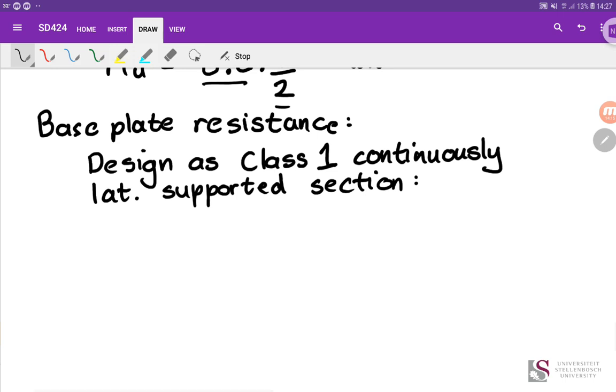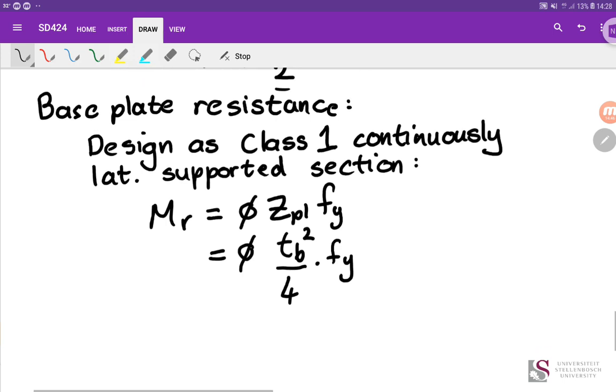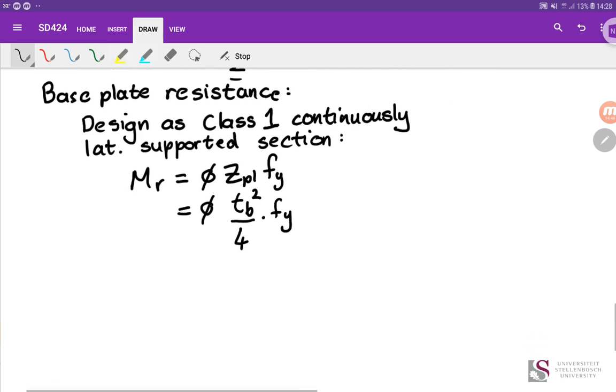So we've got design as a class 1 continuously supported section. Continuously laterally supported section. Laterally supported section. That is it does not experience buckling. And that means your moment of resistance is simply your partial factor times your ZPL times your yield stress of the steel. And for a rectangular section, your ZPL is BD squared over 4. So in this case, our breadth that we're considering is 1. So this will simplify into t squared, twice the thickness over 4. So remember, this is per unit width times the yield strength.